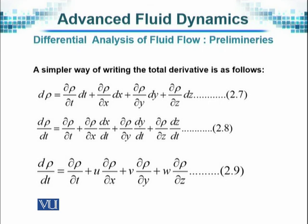A simpler way of writing the total derivative is as follows. We write d of rho equal to the partial derivative of rho with respect to time times dt — that is the local derivative — plus similar terms with respect to x, y, and z. Dividing throughout by dt, this can be written as d rho by dt. The dt cancels out, leaving no standalone total differential d, but instead d by dt terms for each direction.